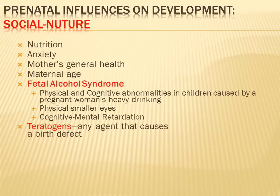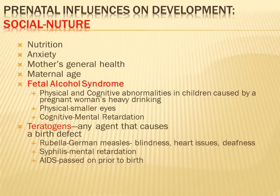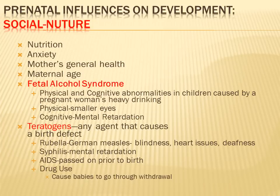Teratogens are substances or agents the mother is exposed to that can cause birth defects. Examples include rubella (German measles), which can cause blindness, heart problems, and deafness; syphilis, which can cause intellectual disability; AIDS, which can be passed to the child before birth; and drug use, which can cause the newborn to experience withdrawal symptoms.